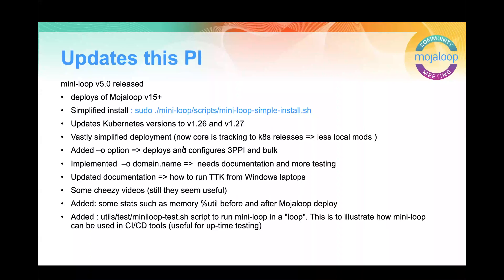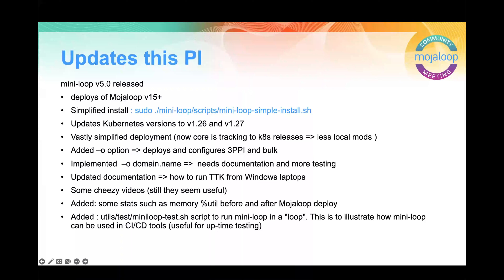We put in updates for the ingresses and separating out the backends - Sam, Miguel, VJ and myself - so I need very few local mods now from what's in the Helm repos to what goes into the charts in the local deploy. Added a minus-O option so per Paul's request it now deploys 3PPI and bulk charts. Also implemented a minus-O domain name option - needs more documentation and testing, but that was for the World Bank GDP demo so you can run a domain name without needing local hosts entries. Updated the documentation on how to run the TTK from Windows laptops.